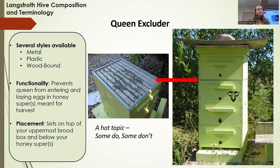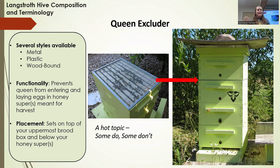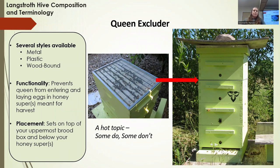Working up to the queen excluder: once all brood boxes are on and you're ready to start collecting honey, the queen excluder goes on top of your brood boxes and below your honey super. The screen is large enough to allow workers through both ways, but small enough that the larger queen cannot pass through, preventing her from laying eggs and larvae in what you're trying to harvest. Not everybody uses a queen excluder — I'll usually leave it off until the bees begin drawing wax in the honey super, and once there's interest up there, that's when I put the excluder on.